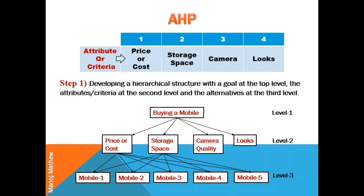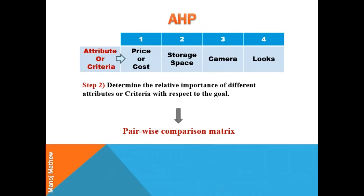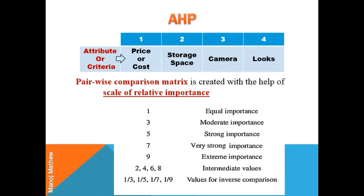The second step is to create a pairwise comparison matrix. This pairwise matrix gives the relative importance of various attributes with respect to the goal. For example, how important is price while buying a mobile, or what is the importance of storage space when we buy a mobile phone?